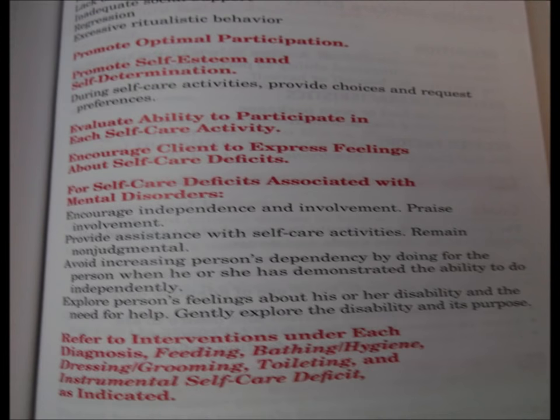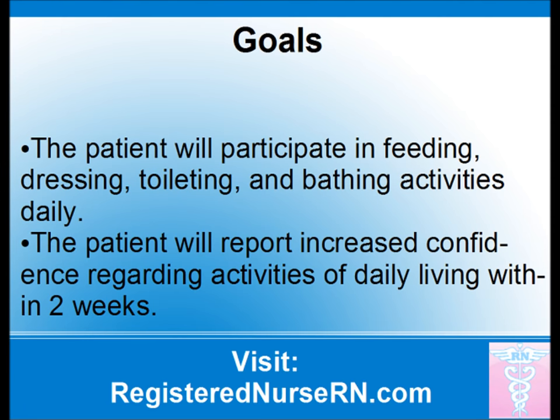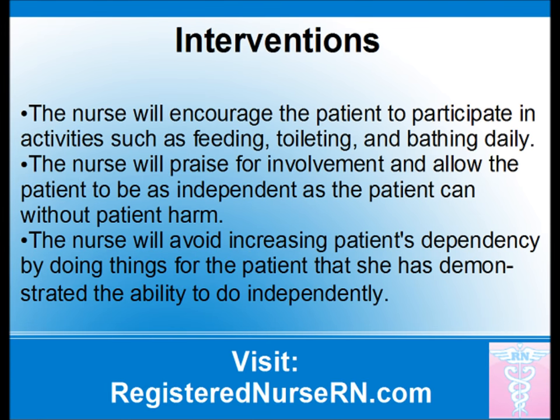Next is to develop patient goals and nursing interventions. Again, your nursing care plan book can help with this. For this patient, the following goals can be: the patient will participate in feeding, dressing, toileting, and bathing activities daily; and the patient will report increased confidence regarding activities of daily living within two weeks. Some nursing interventions would be: the nurse will encourage the patient to participate in activities such as feeding, toileting, and bathing daily; the nurse will praise for involvement and allow the patient to be as independent as possible without patient harm; and the nurse will avoid increasing the patient's dependency by doing things for the patient that she has demonstrated the ability to do independently.